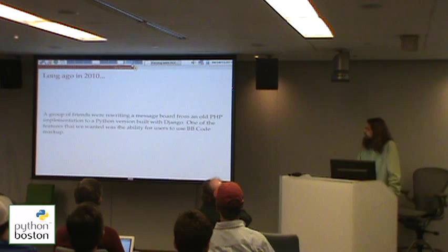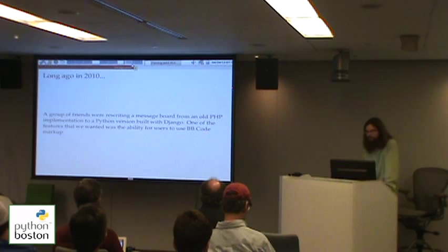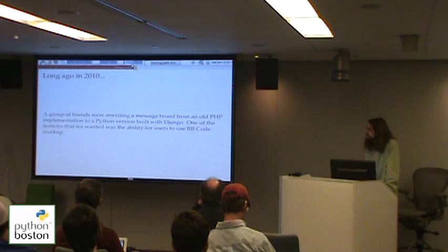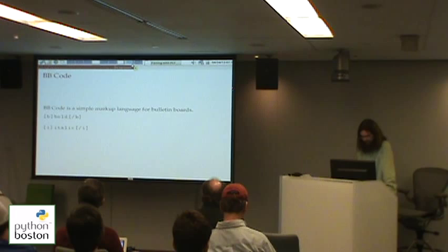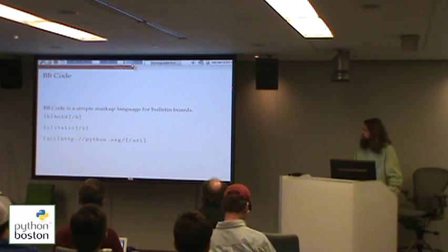Why did I start using PLY? A couple of years ago, a group of friends and I had old message board software written in PHP that got crufty. We decided to rewrite it in Django because a lot of us were familiar with Python. One of the things we wanted was a BB code parsing engine. BB code is a simple markup language for bulletin boards — it uses square brackets to wrap around things, so you can have bold text, italic text, or URLs. It's a relatively simple and fairly widely used markup language.